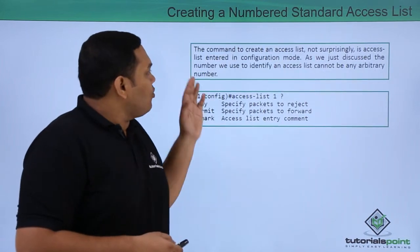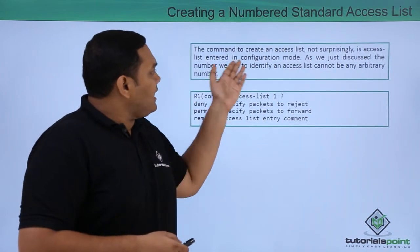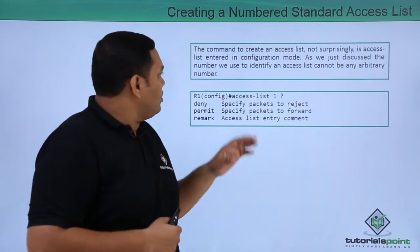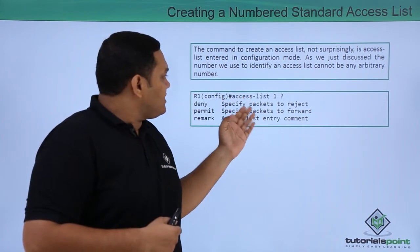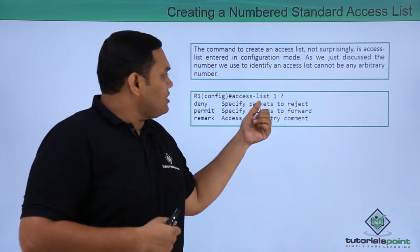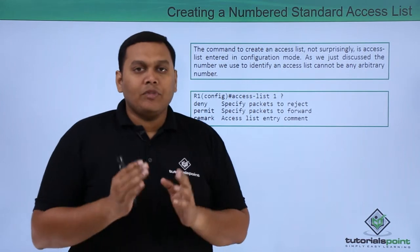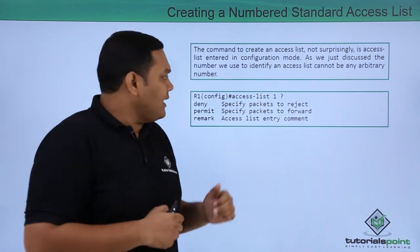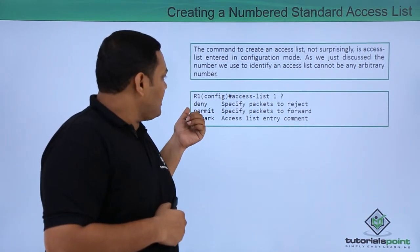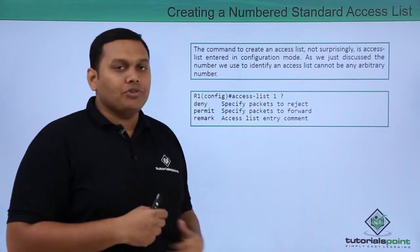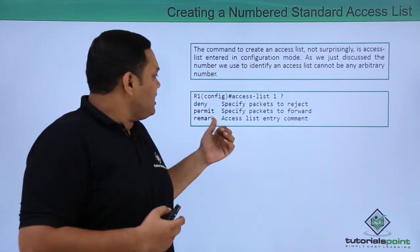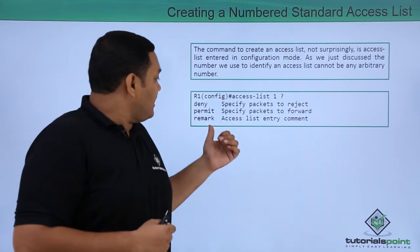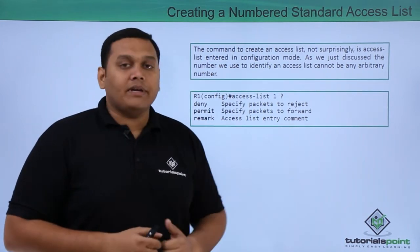When you want to create an access list in access configuration mode, you enter 'access-list 1 ?' and it gives you three options: deny — to reject packets, permit — to forward packets, and remark — to add an access list entry comment.